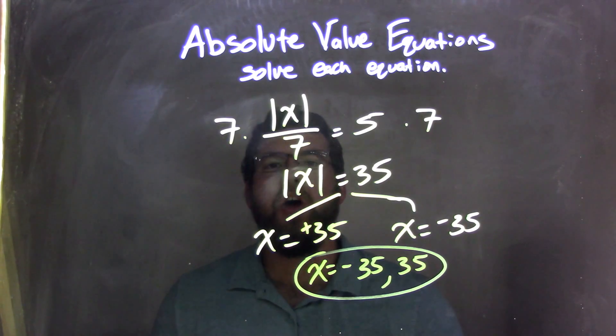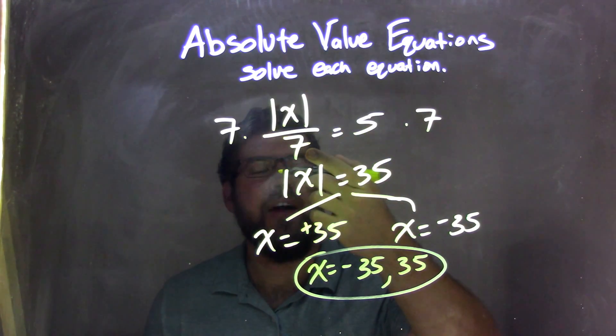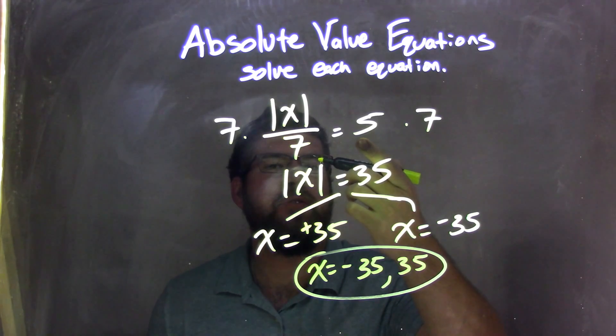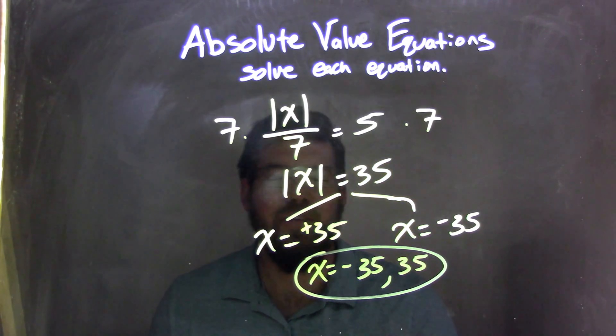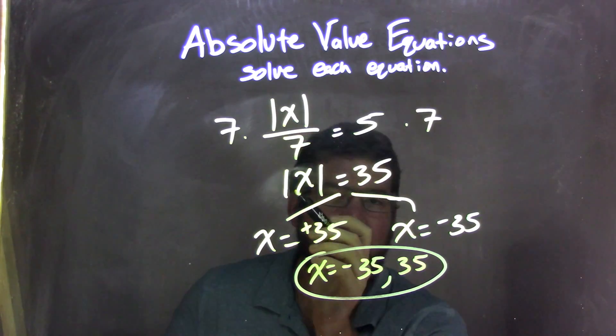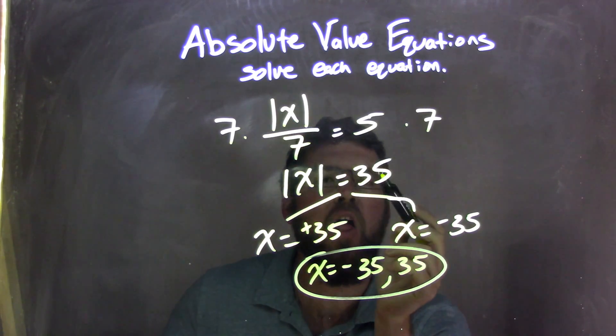Well, to recap, we were given absolute value of x over 7 equals 5. I need to get the absolute value by itself. I need to isolate it. So I multiply both sides by 7, leaving me with the absolute value of x by itself, equals 35, because 5 times 7 is 35.